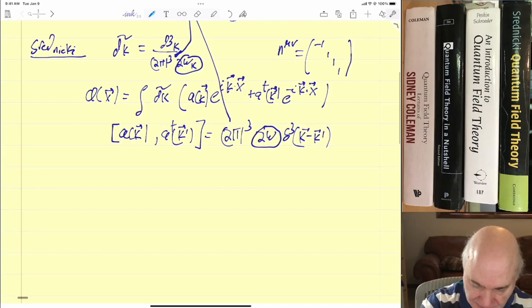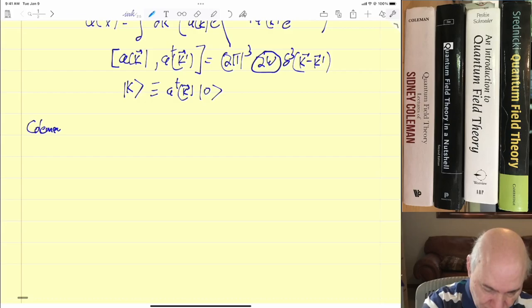When you have two creation operators. And he defines his states, actually he defines relativistic states. Sridnecki is always using relativistic. So he's going to just a†k inside operating on the vacuum. Now to make matters, just to show you how every book does it differently, Coleman does it two different ways.